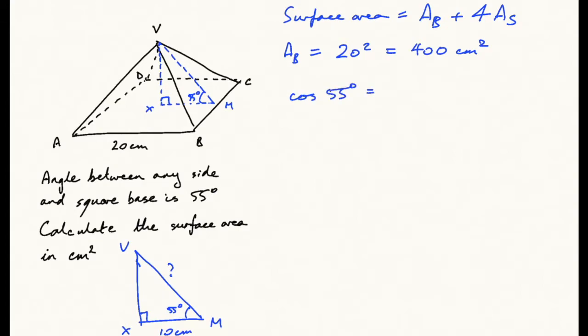This means VM equals 10 divided by cos 55 degrees, which is going to be...